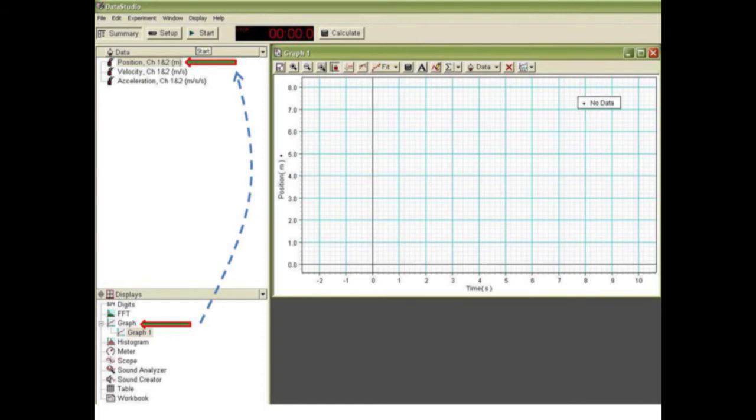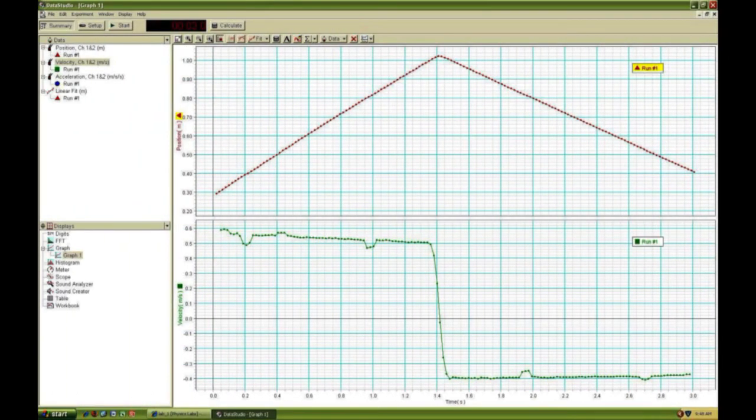Drag and drop the graph icon from the lower left displays area onto the position icon above. Drag and drop the graph icon onto the velocity icon above. In this way both graphs of position and velocity will be lined up with the same time axes.